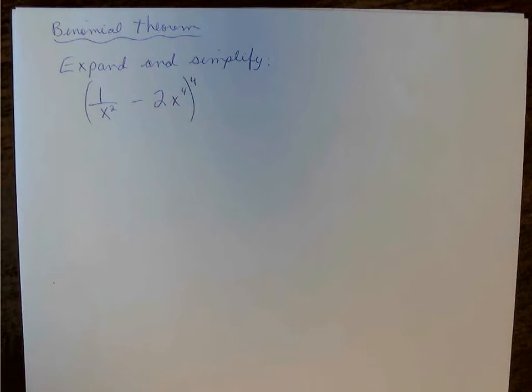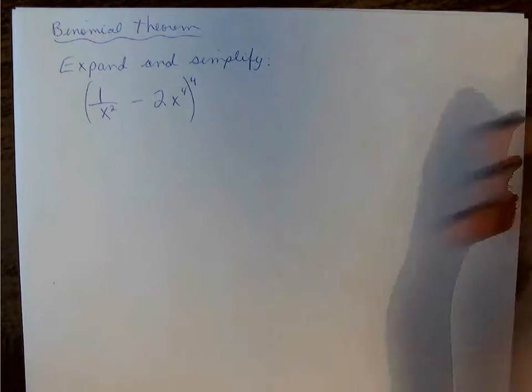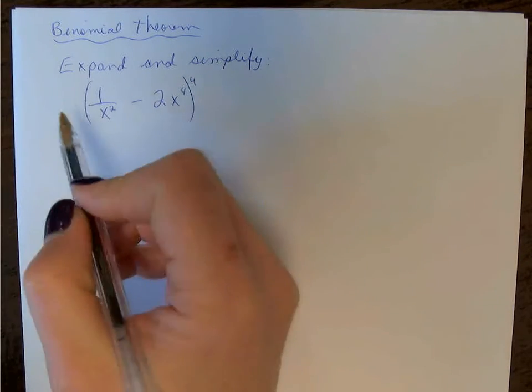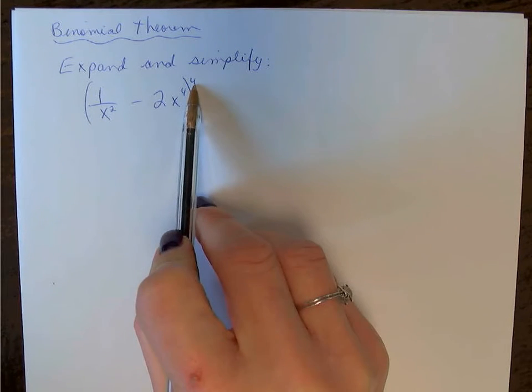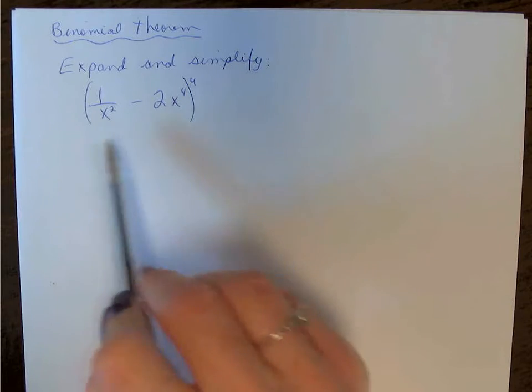Expand and simplify (1/x² - 2x)^4 to the 4th degree. So when we're looking at expansion here, if we've got 4 as our exponent up here, we're going to have 5 terms.